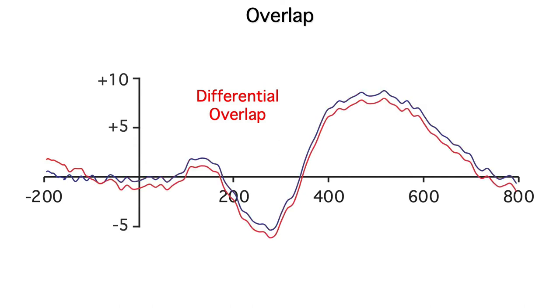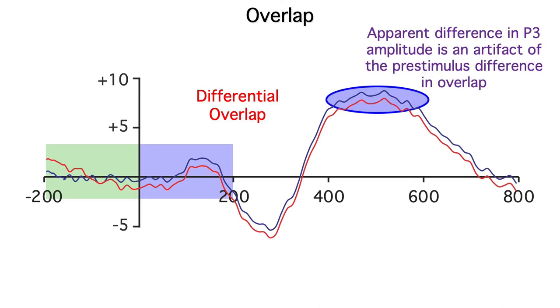This causes the whole waveform to be shifted downward by the baseline correction process. You can see the overlap here, and you can see that the entire waveform is shifted downwards starting right after time zero. This causes an apparent difference between conditions in P3 amplitude, but this difference is actually an artifact of the differential overlap.